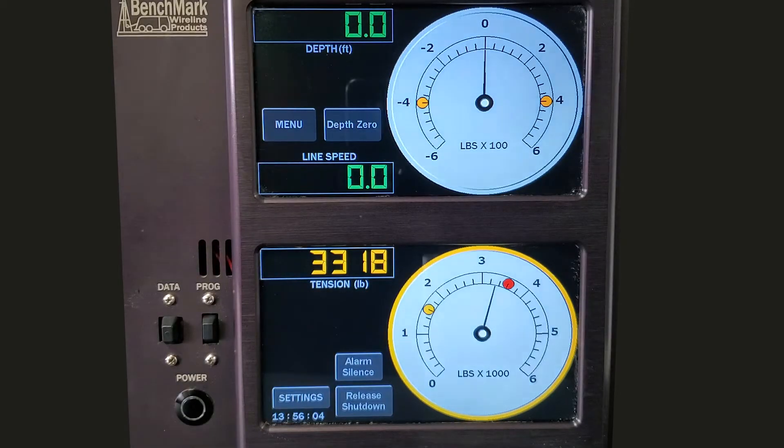If the line is stuck in the hole, you may need to apply more tension than the normal shutdown value to move the line. Manually change the shutdown value to a very large number to temporarily allow extra tension on the line.